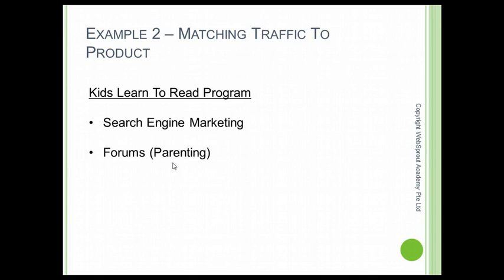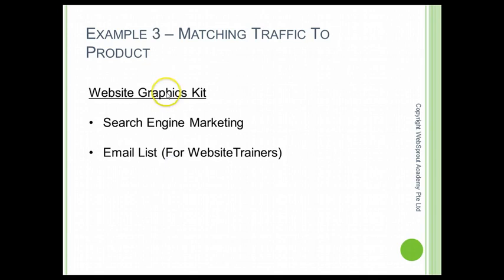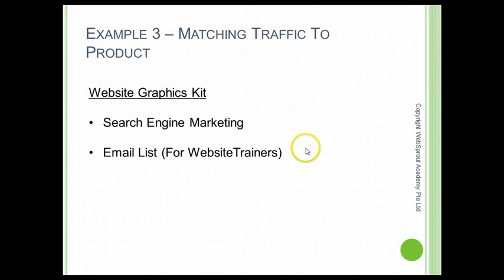You can also embed the link in your signature in those forums. Example three is a website graphics kit — a whole list of graphics people can use for their website, also available on ClickBank. You can use search engine marketing or an email list. This is a personal example: I have been training students on website creation and website marketing, so I have an email list of students who are creating or have created websites.